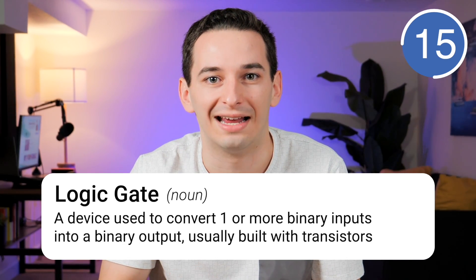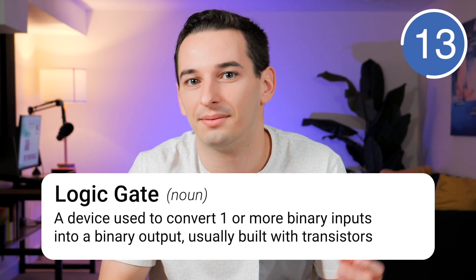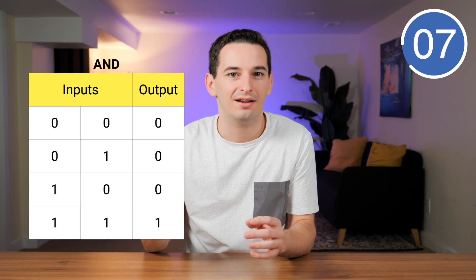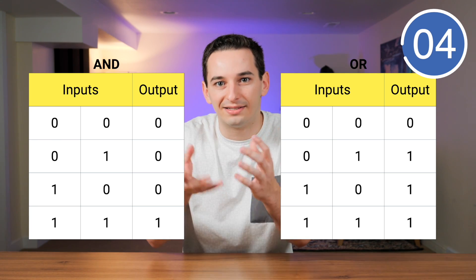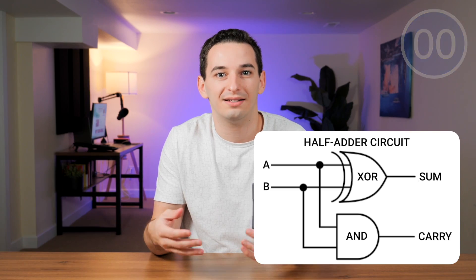Computers don't just store information — as the name suggests, they also compute information. To do this, we still just use a bunch of transistors, specifically what are called boolean logic gates. These just take in some binary inputs and can create a different binary output. Some of the most basic are AND and OR gates, and if we combine enough of them together we can create more complex circuits for things like addition.